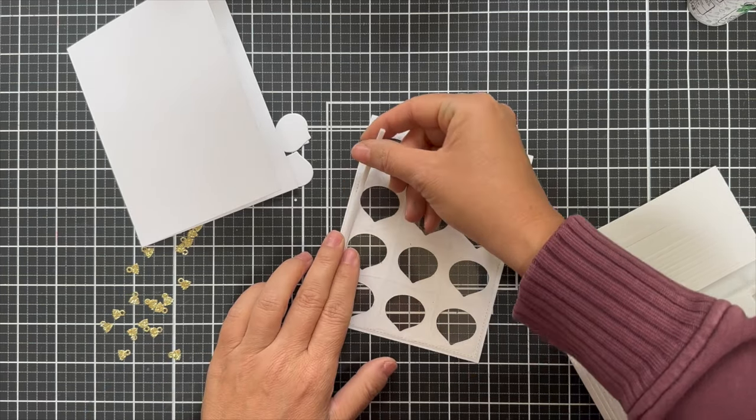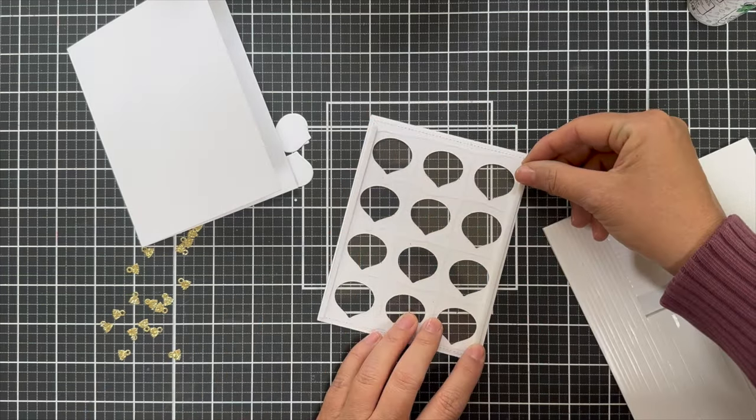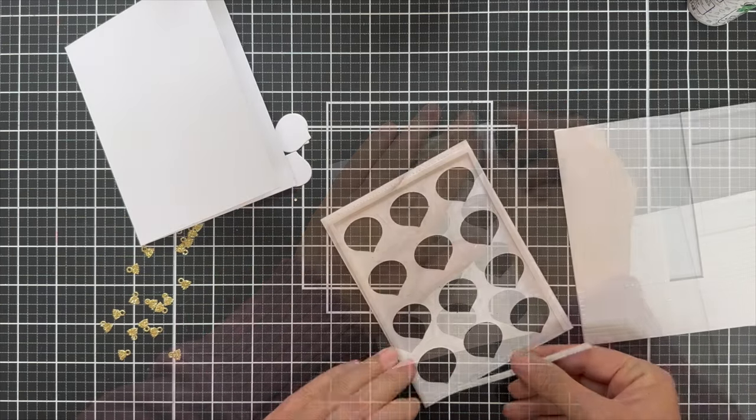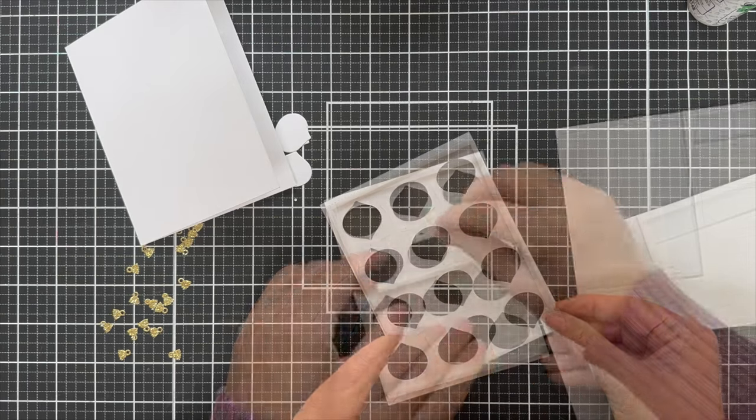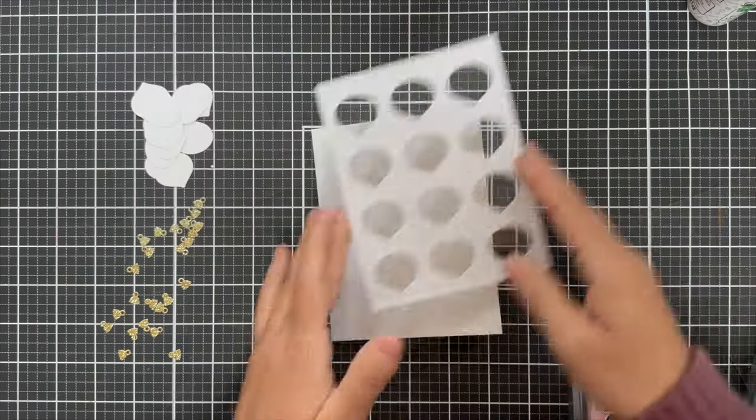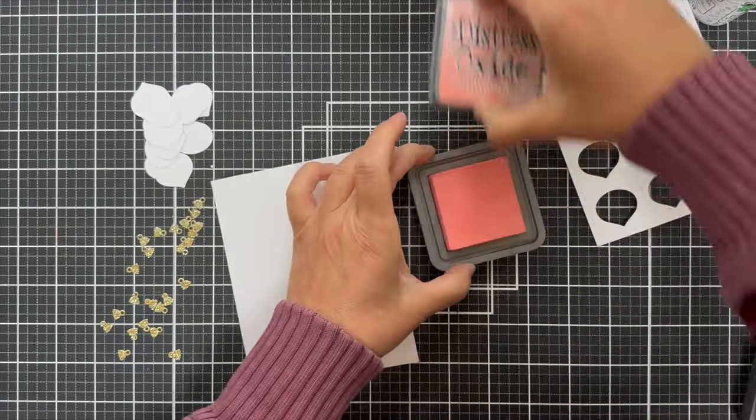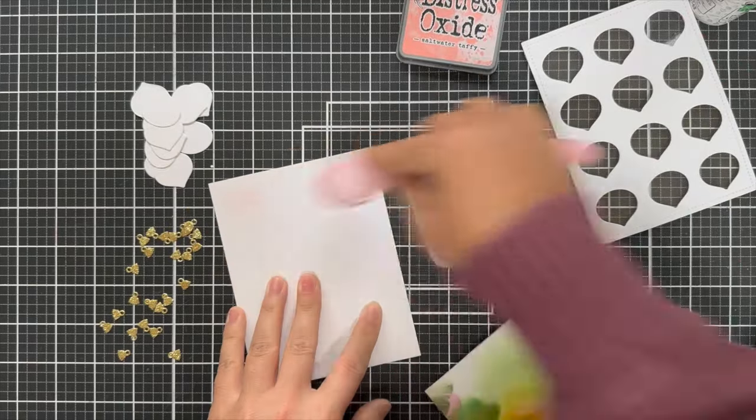And then I'm adding, since it's going to be a shaker, my favorite foam adhesive strips. These are by Waffle Flower Crafts. A lot of different brands carry them, but they are great when you're making shaker cards. Now for the base, the card base that's going to be showing through, I wanted to add a little bit of subtle color.